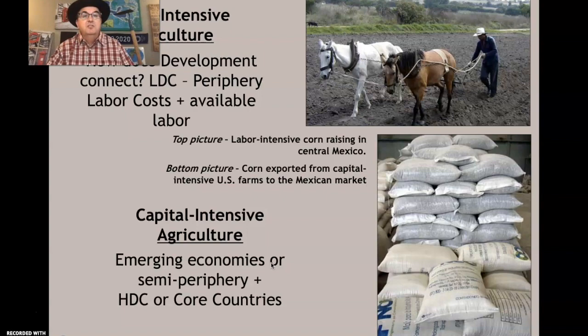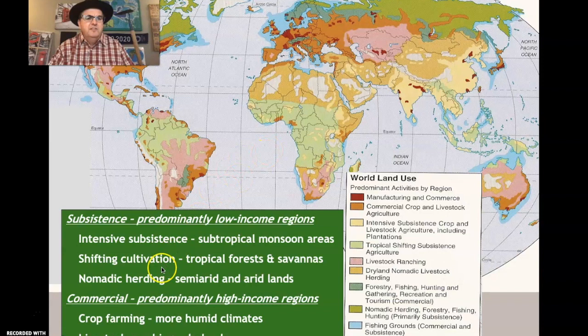Knowing what parts of the world different types of farming occur is something you need to look at in your books. If you know a country is a less-developed region, such as parts of sub-Saharan Africa, subsistence farming will be much more prevalent. In Western Europe or the United States, you'll see much more commercial farming. Semi-periphery countries like Brazil, Mexico, Chile, and parts of northern Africa will often produce for commercial intents for nearby markets.